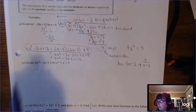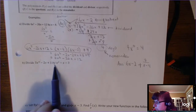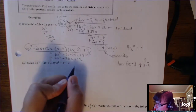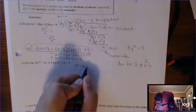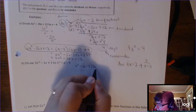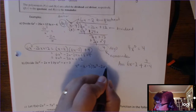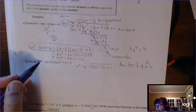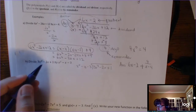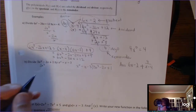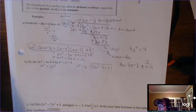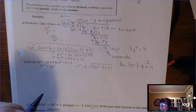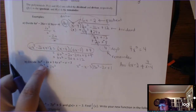Let's try another one. Make sure you're in descending order: 3x to the fourth minus 2x plus 1, divided by x squared minus x minus 3. The divisor goes outside. Now notice that terms are missing — it goes from x to the fourth to x, so there's a missing x cubed term and a missing x squared term. Some teachers write in 0x cubed and 0x squared as placeholders, but I just prefer to be aware of the missing terms and deal with it.